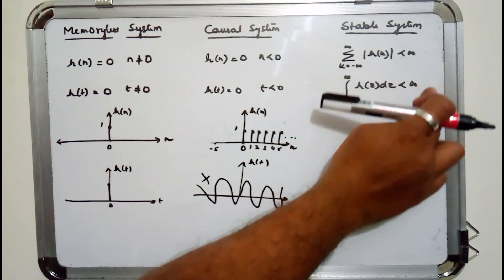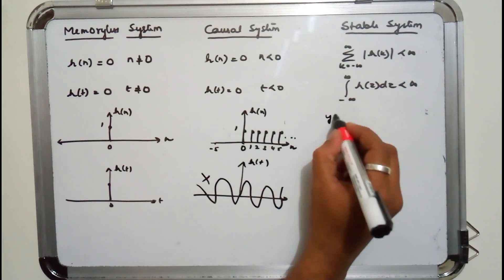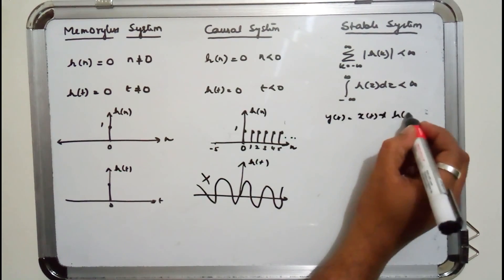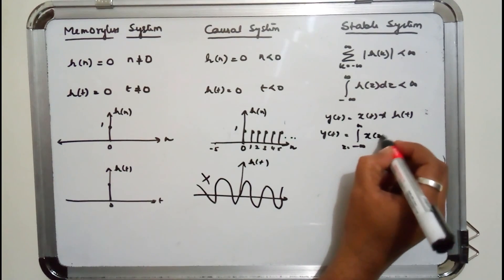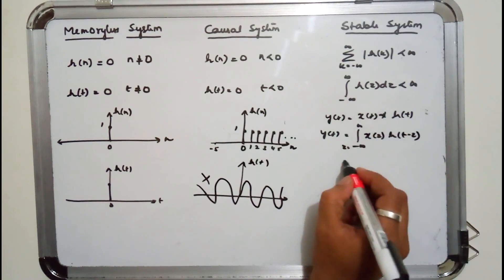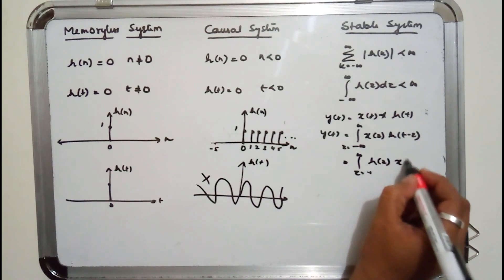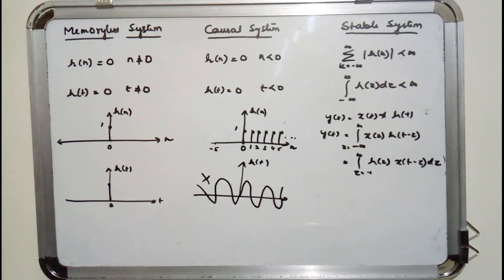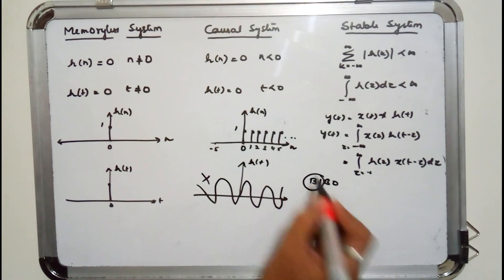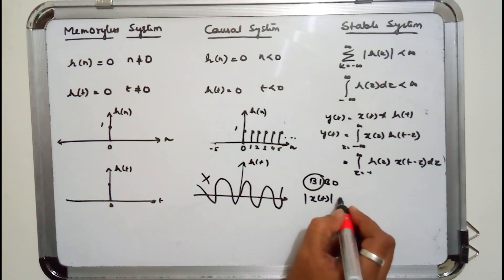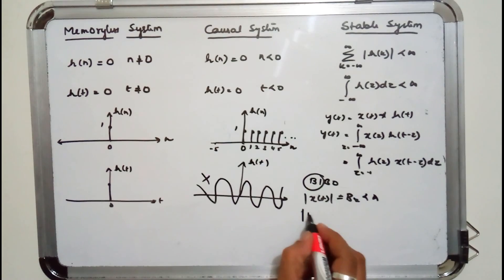The proof is straightforward. We have y(t) = x(t) convolved with h(t), which gives y(t) = integral from minus infinity to infinity of x(τ) h(t−τ) dτ. Using the commutative property, we can also write this as the integral of h(τ) x(t−τ) dτ. For stability, we use BIBO — bounded input bounded output — stability, meaning x(t) is bounded by some value B_x which is less than infinity.